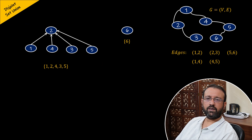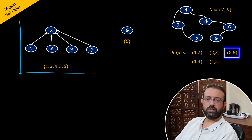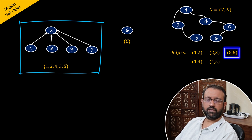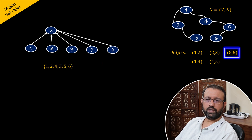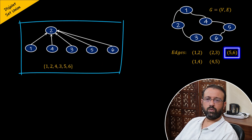Then we have an edge between vertex five and vertex six. We need to find whether vertex five and vertex six are in different sets. Vertex five belongs to the set which contains one, two, four, three, and five, and vertex six belongs to set six, so they are in different sets. Therefore, we will perform union of that set and set six. After the union operation, vertices one, two, four, three, five, and six will be in the same set.